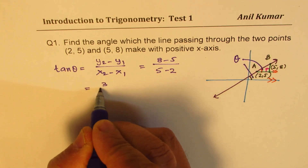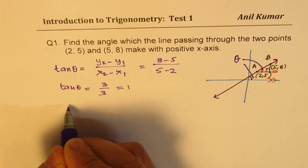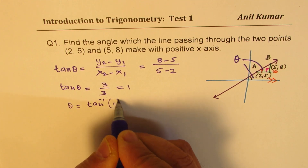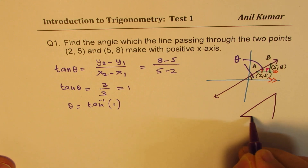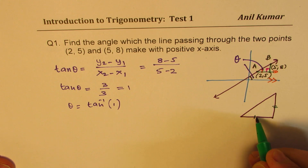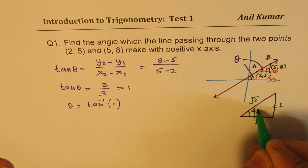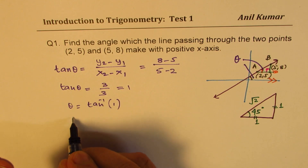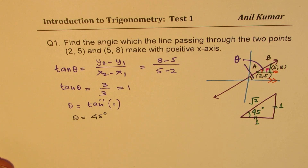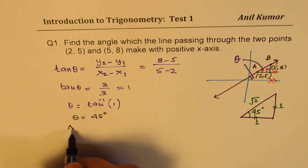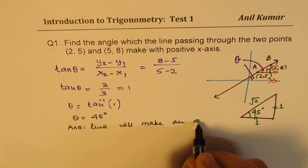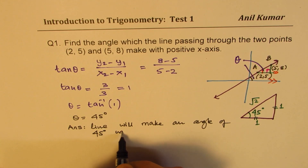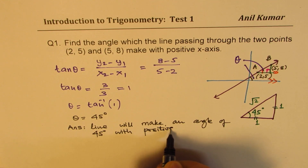That gives us 3 over 3, which is 1. So tan theta equals 1, and theta is tan inverse of 1. If you know these special triangles, you can easily answer this — the 45-45-90 triangle has two equal sides of 1 and 1 with hypotenuse square root 2, and the angle is 45 degrees. So theta equals 45 degrees, and the line makes an angle of 45 degrees with the positive x-axis.